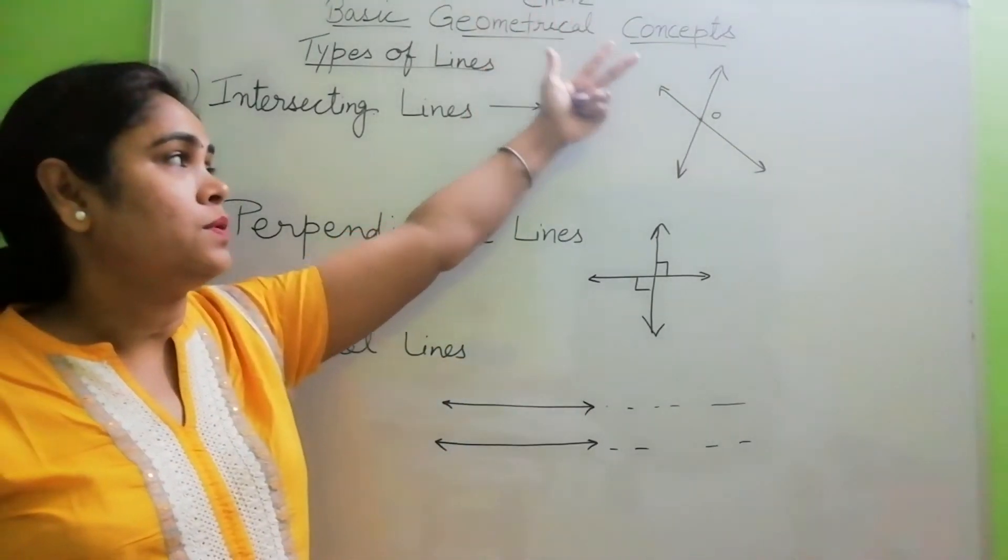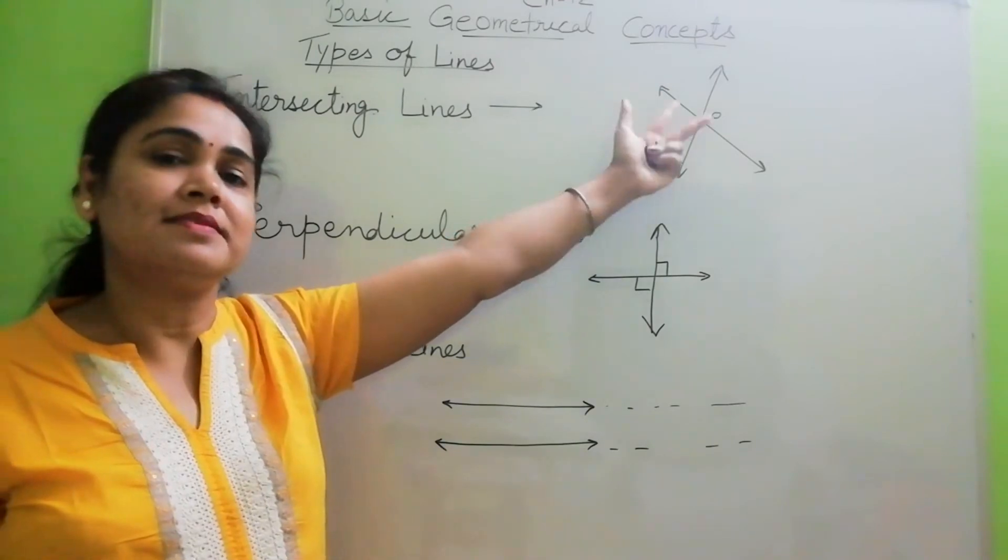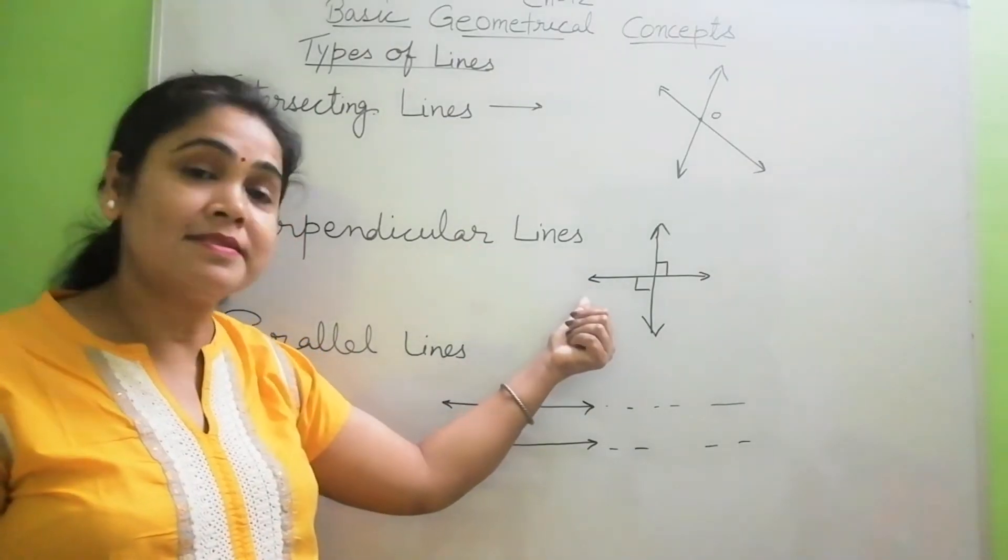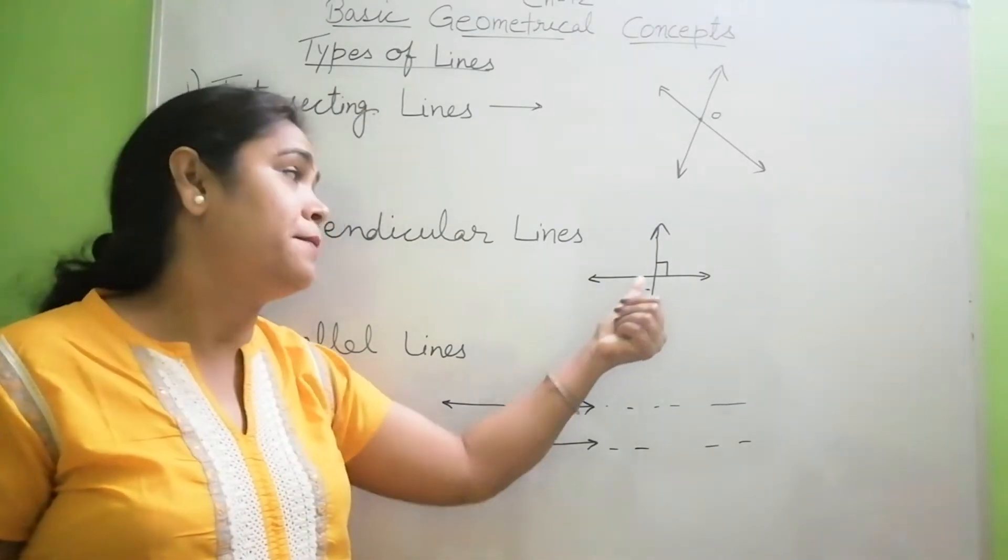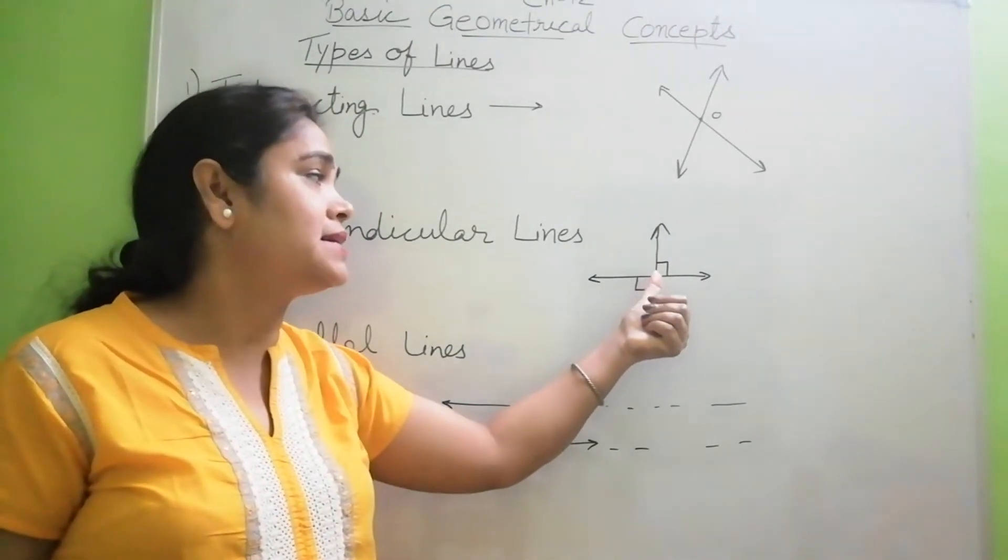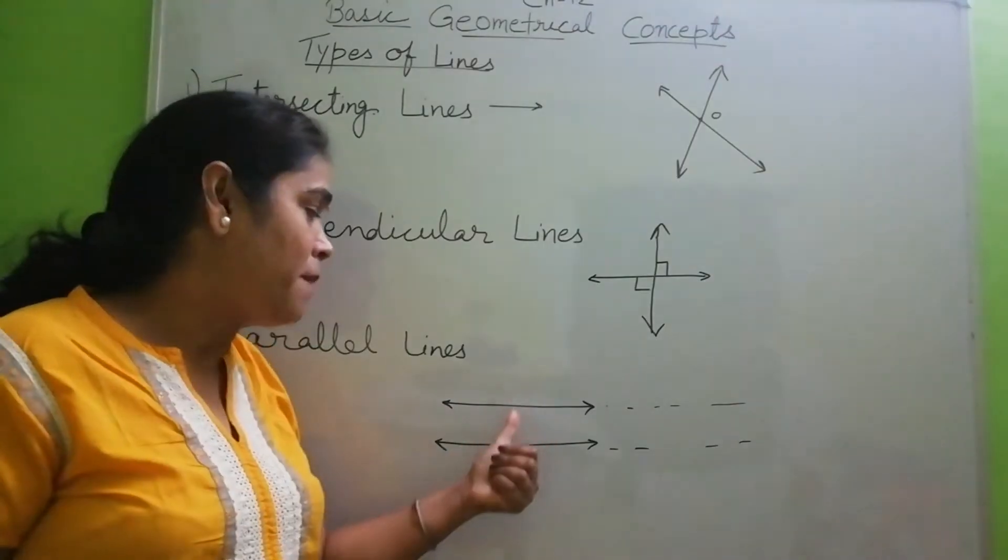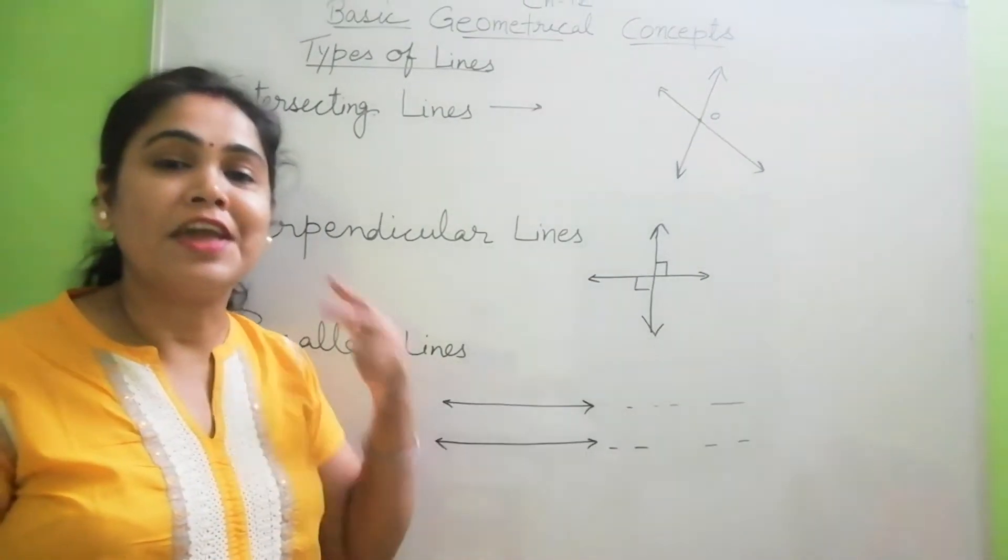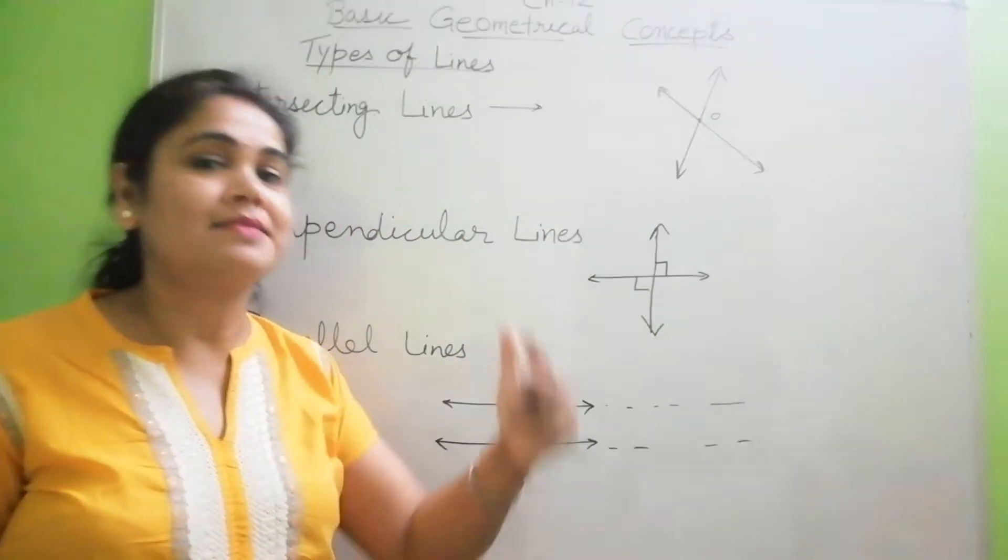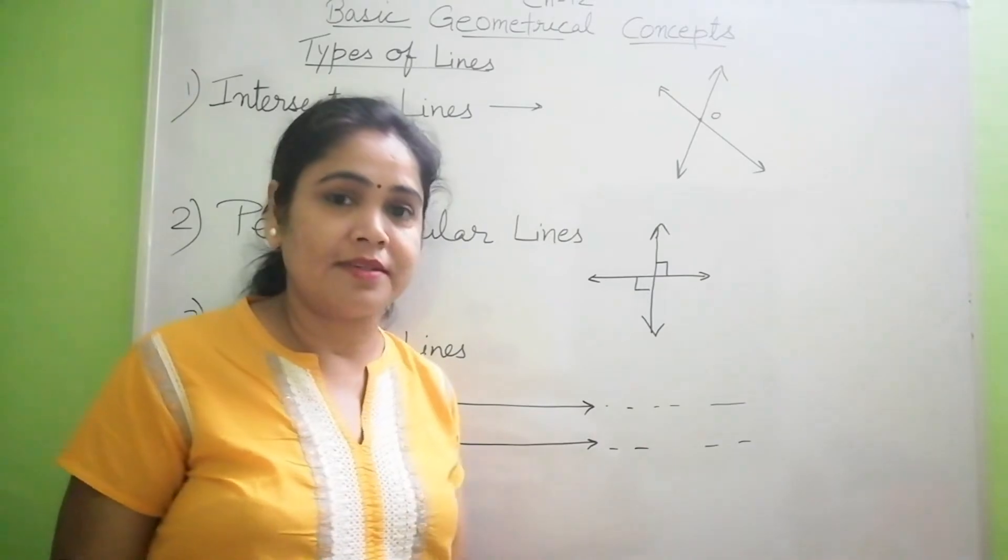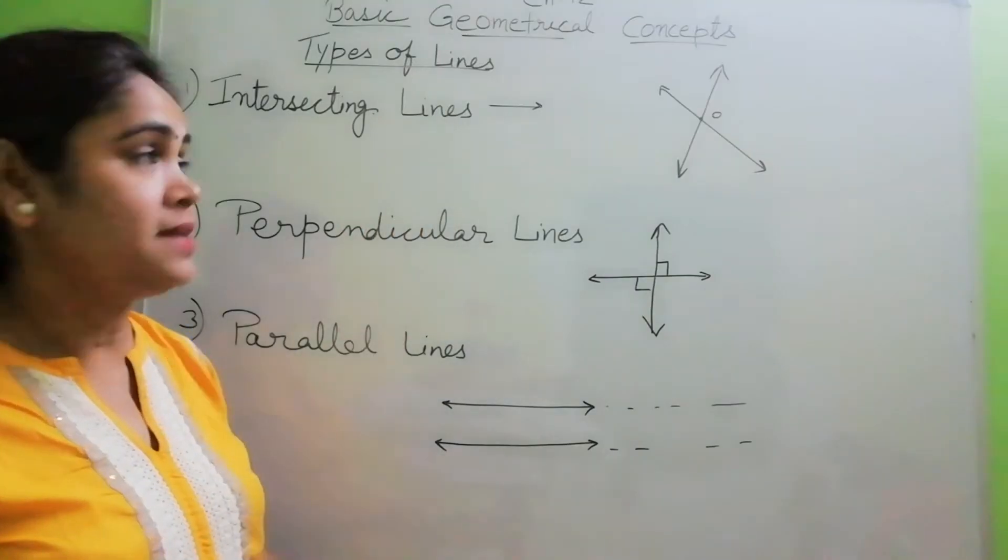Here, intersecting lines means they intersect each other. So perpendicular lines are also intersecting lines, but they intersect only at an angle 90 degree. And parallel lines never intersect each other. These are the differences. Now we will learn more about this.